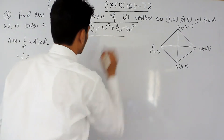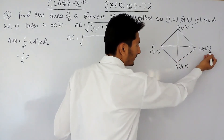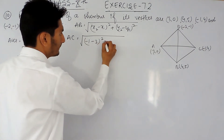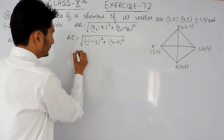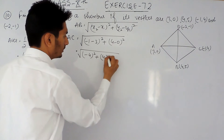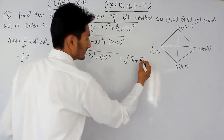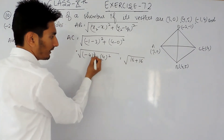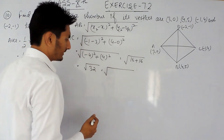Applying the distance formula, taking A as (x1, y1) and C as (x2, y2): the distance AC equals the square root of (-1 minus 3) whole square plus (4 minus 0) whole square, which gives us the square root of (-4) squared plus (4) squared. This is the square root of 16 plus 16, which equals the square root of 32. Since the power is even, the negative value becomes positive.